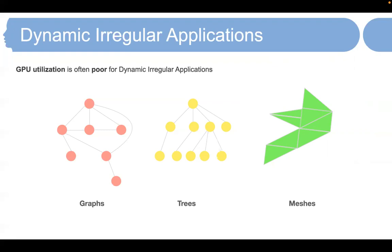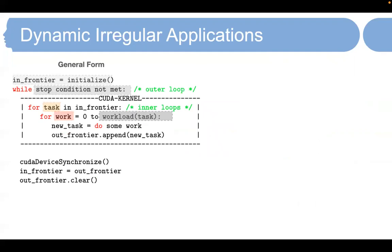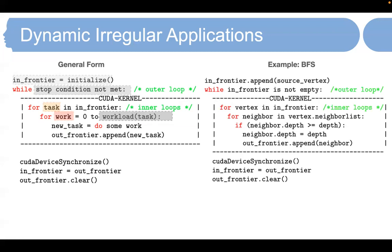We firstly show a general form of dynamic irregular application on GPUs. This general form has an outer loop on the CPU side and an inner loop on the GPU side. For each inner loop task, there is a third loop iterating over the workload of that task. We can express many dynamic irregular applications in this general form, for example, BFS. We show the pseudocode on the right side.